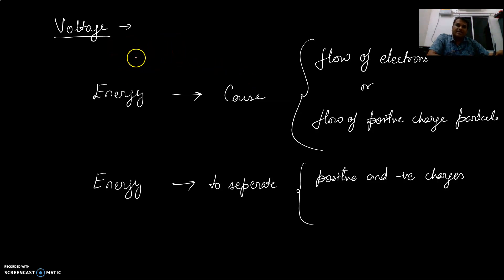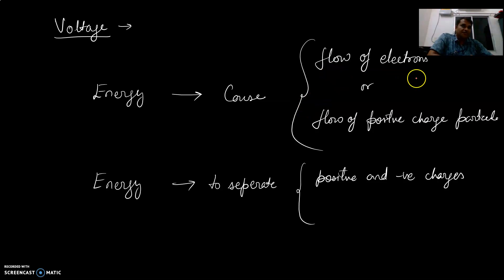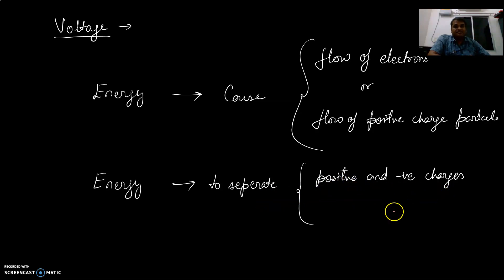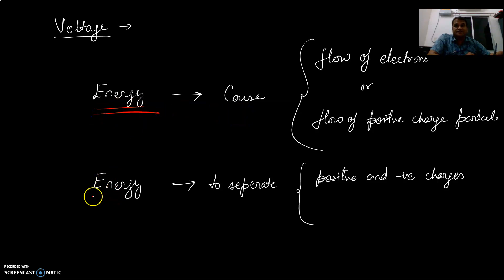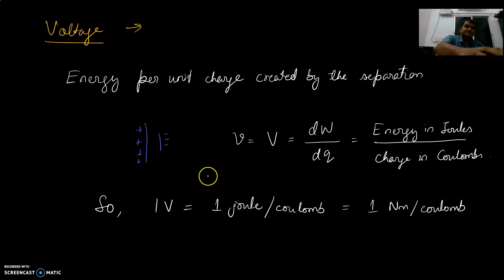From the concept of current, we see there must be some energy involved. The causes of current are the flow of electrons or positive charge particles — or the separation of positive and negative charges. Whatever the cause, the underlying driver is energy. Energy per unit charge created by the separation is the voltage.